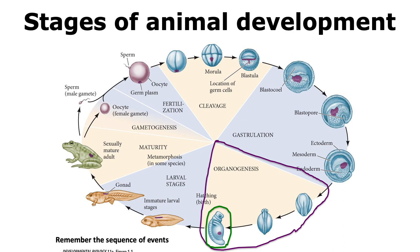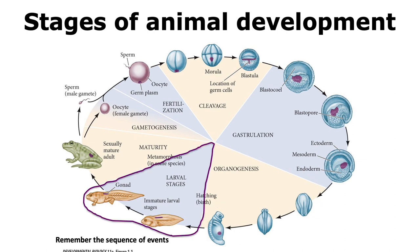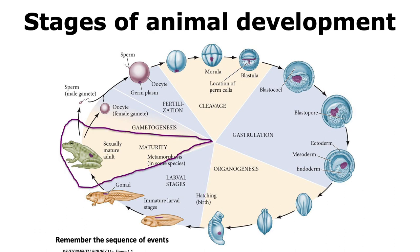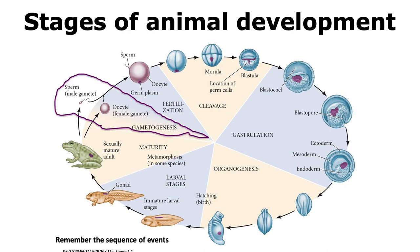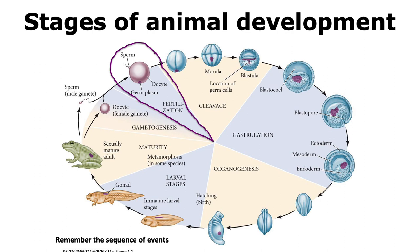Once the organs are formed, the organism is ready to be born, or it undergoes hatching if it is in an egg. In the case of many animals like insects and amphibians, the organism that is born undergoes many changes called metamorphosis, and only then does it become a mature adult organism capable of sexual reproduction. This adult organism can form gametes through gametogenesis — males form sperms and females form eggs or oocytes — which can fuse in fertilization, and the whole process begins again.